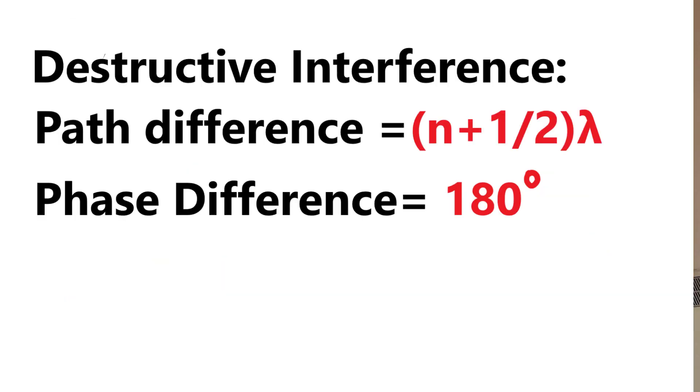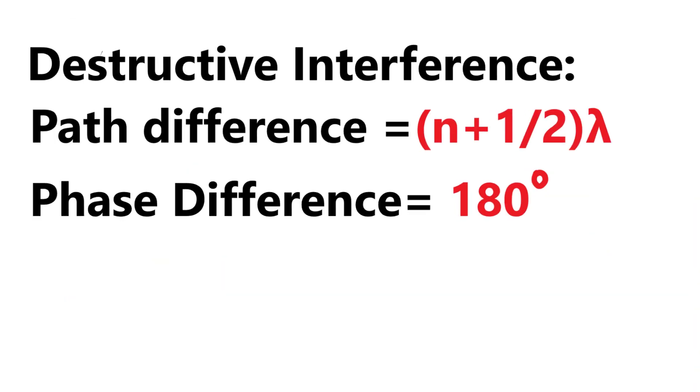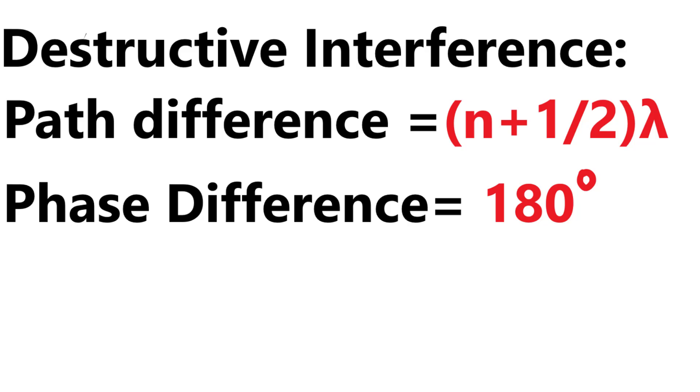On the other hand, for destructive interference, the path difference is equal to n plus a half lambda, where n is an integer, and the phase difference is 180 degrees.